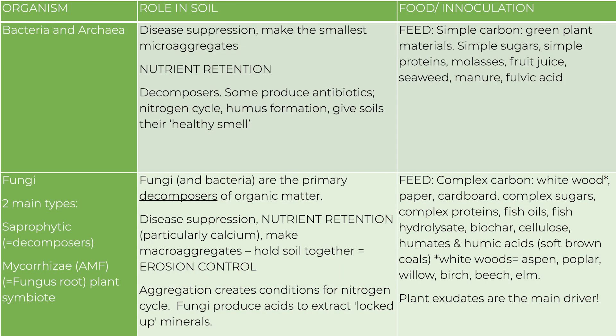Fungi are also producing acids to help release locked-up minerals. As they're building some of these soil structures, they can also be building rocks in a process called geomycology. Sometimes when thinking about carbon drawdown, fungi can put carbon down into rocks so that carbon is actually sequestered permanently. Fungi also build chitin, which is concentrated carbon, and they take hydrogen and oxygen from organic materials, combine them, and release water.